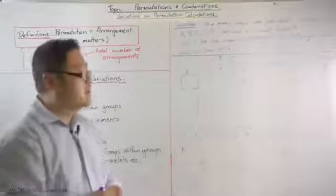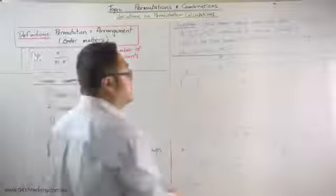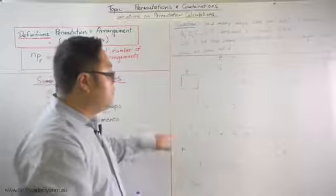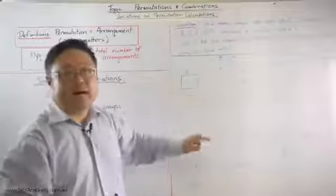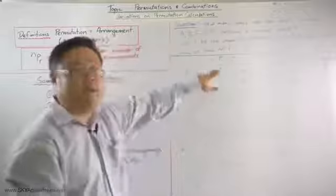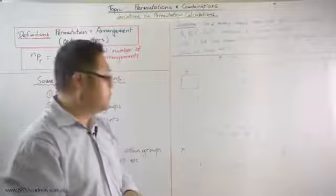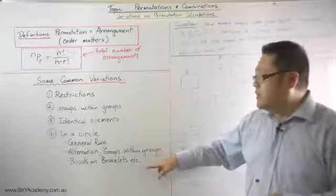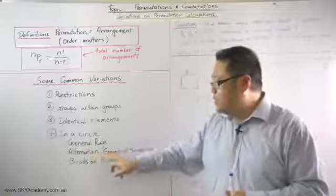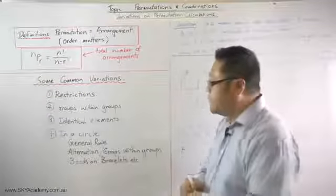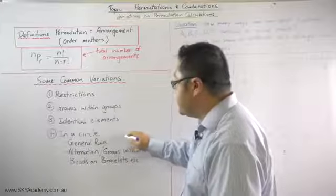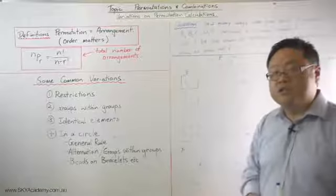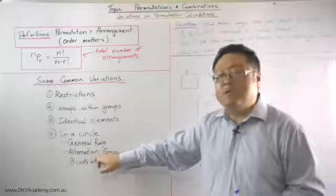So generally speaking, where you've got N elements arranged in a straight line, the number of arrangements would be N factorial, whereas in a circle it would be N minus one factorial. Each arrangement in a circle will have N different arrangements in a straight line depending on where you start. So you divide by the number of elements in that circle. That's the general rule: N minus one factorial arrangements for N terms within a circle where there are N positions.